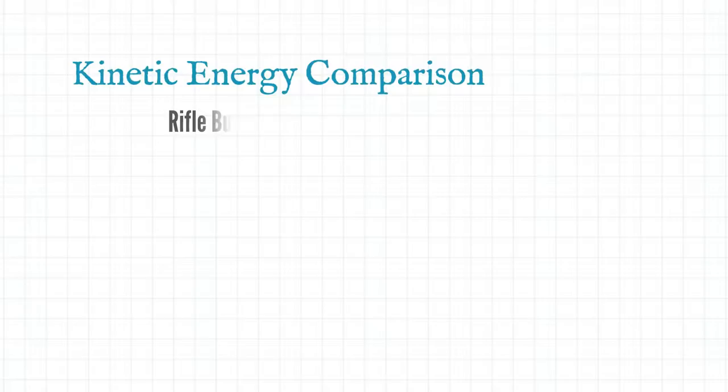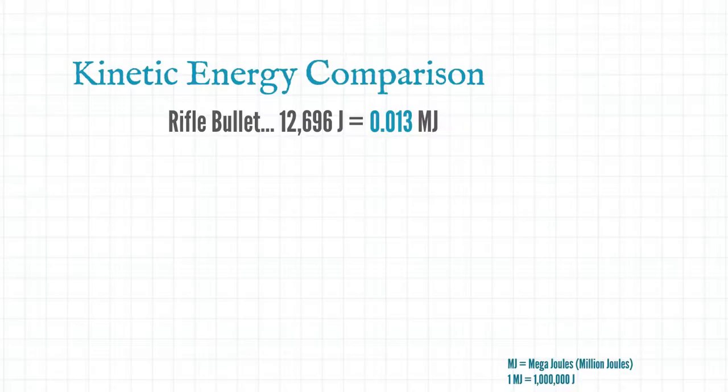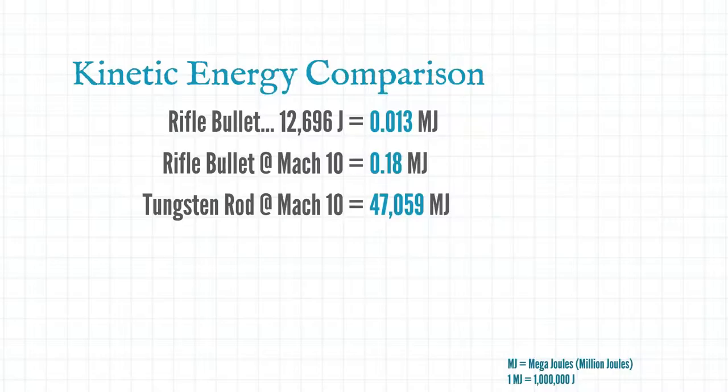So let's try and use some real world examples to visualise this. Going back to our rifle bullet, the energy from the impact would be around 12,696 joules. Now we're going to have to go up a couple of orders of magnitude in order to get our head round these numbers. Here we're going to use megajoules. A megajoule is a million joules and your rifle bullet is 0.013 megajoules. Well let's say we accelerated that rifle bullet up to Mach 10. Now you're putting out 0.18 megajoules. So how does that compare to our tungsten rod? Well the increased weight of this projectile obviously has a big impact and now we've made it to 47,000 megajoules.